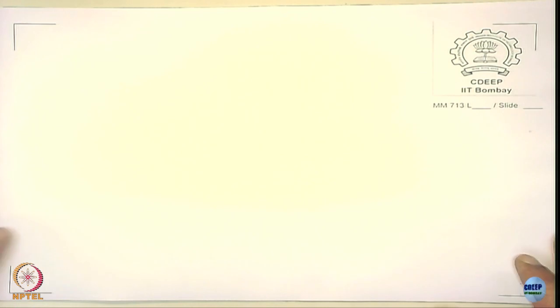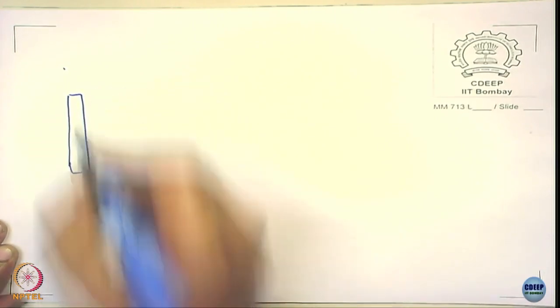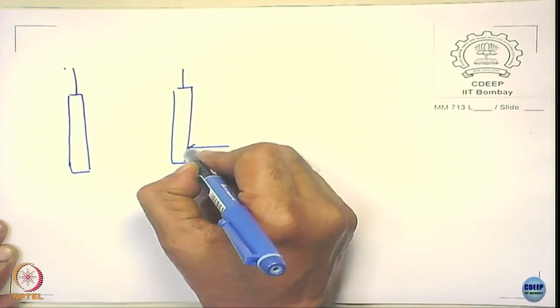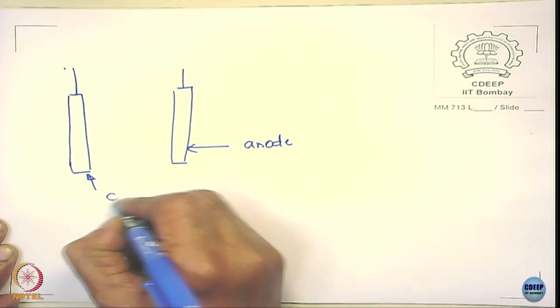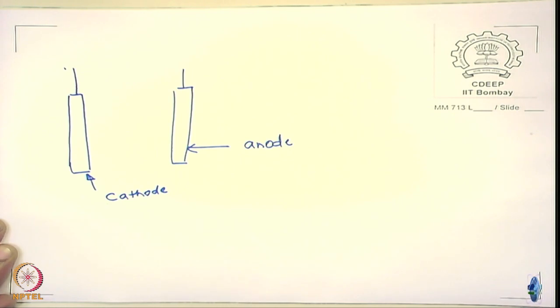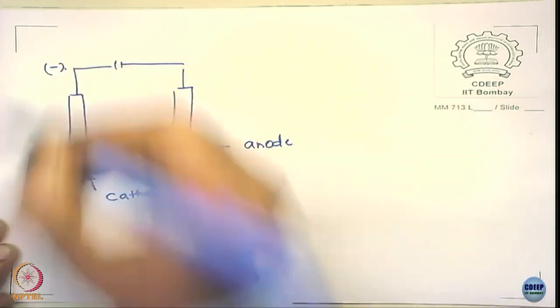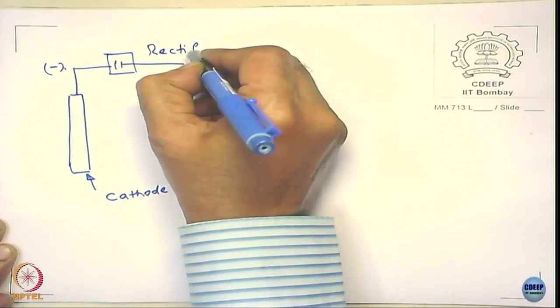How do I apply the current? The metal structure is made the cathode and we need an anode. We apply DC current using a rectifier. The negative terminal connects to the structure (cathode) and the positive terminal to the anode. The direction of current flow is opposite to the direction of electron flow.